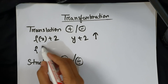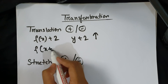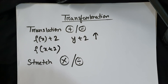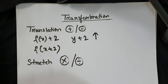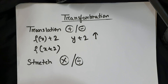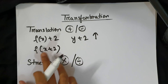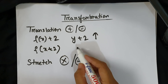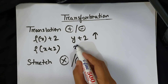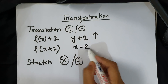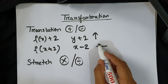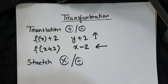The same thing when you write inside the brackets, it means x changes. And if x is affected, then the effect is opposite. So if x equals plus 2 inside the brackets, then x equals minus 2 and the graph will shift 2 units leftward.